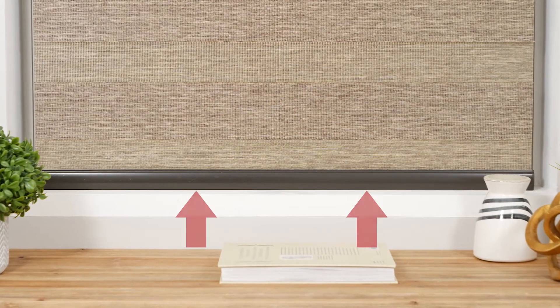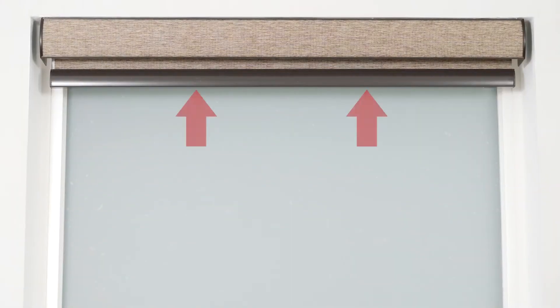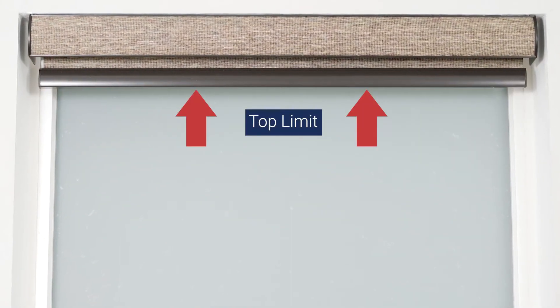Next, we'll review how to adjust your shade's lower limit. This step is optional as your shade comes from the factory with the upper and lower limits already programmed.